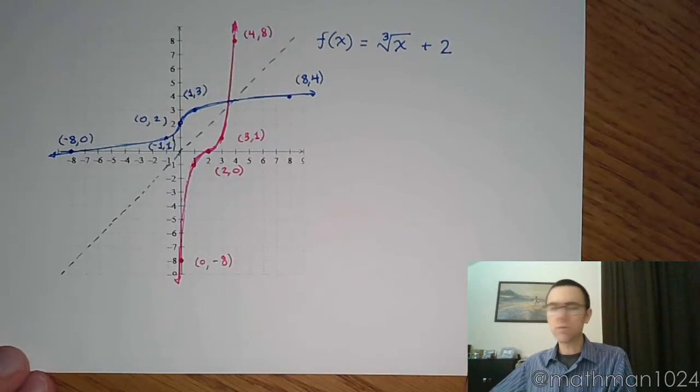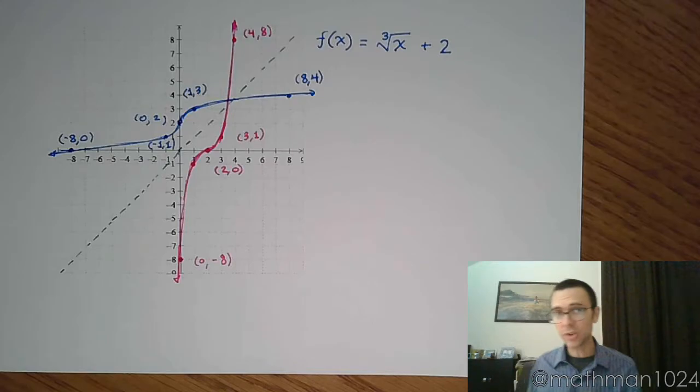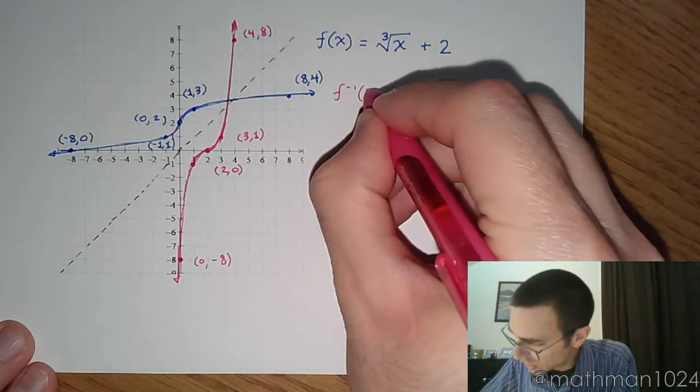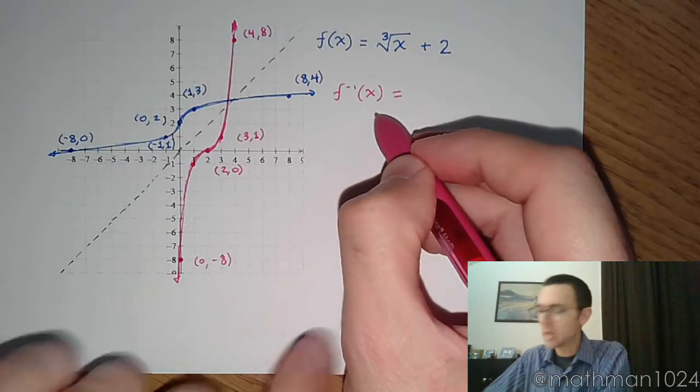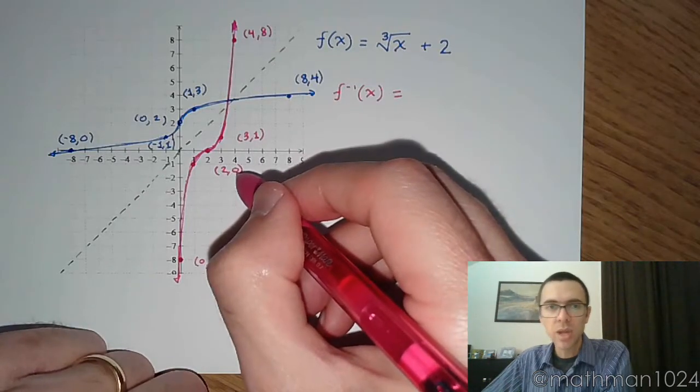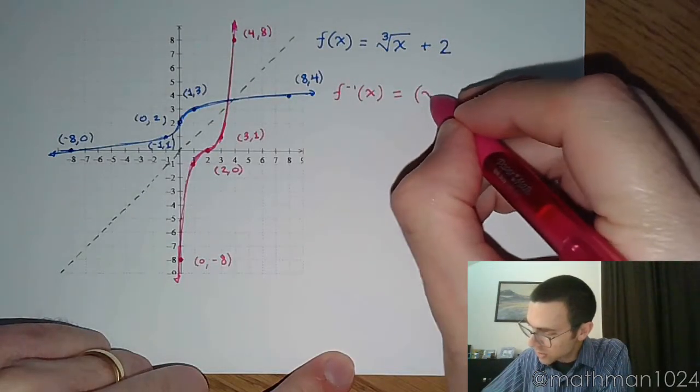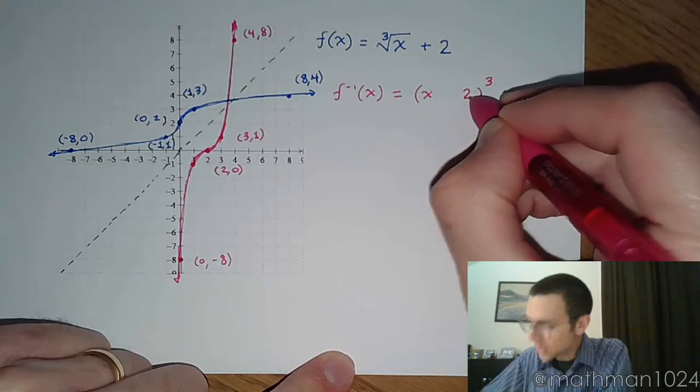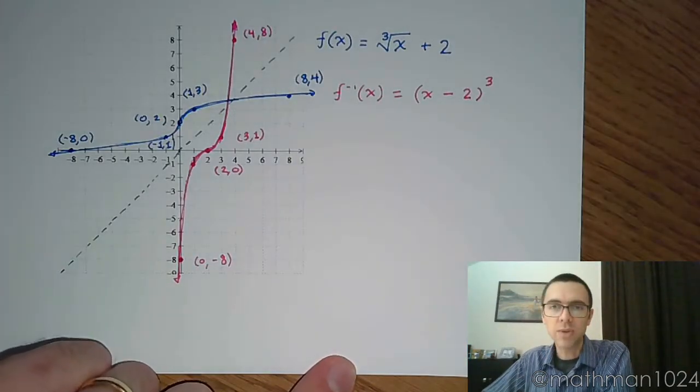So let's talk about what that inverse is. So we've got the graph, right? From the graph, can we come up with a function? Can we come up with his inverse? Notice the notation that I'm using here, f inverse of x. Well, this is a cubing function that has been shifted to the right two units. So a cubing function is something like this.